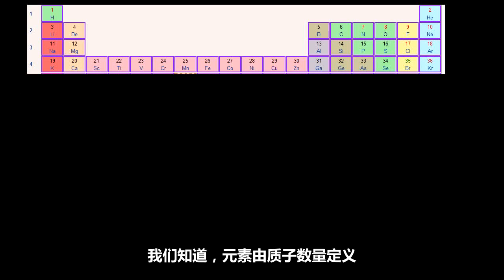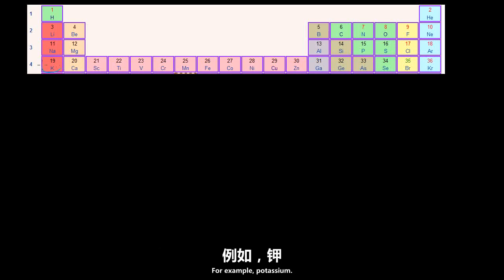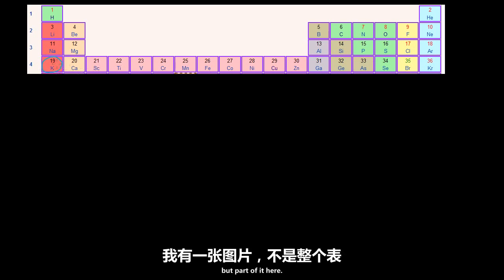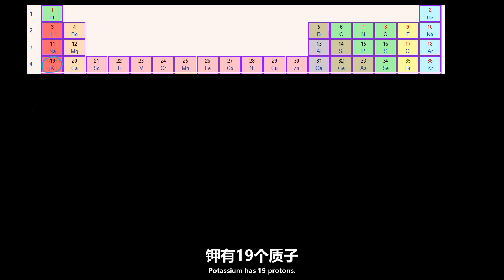We know that an element is defined by the number of protons it has. For example, potassium — we look at the periodic table of elements, and I have a snapshot of part of it here. Potassium has 19 protons.